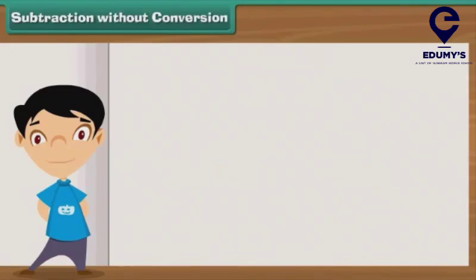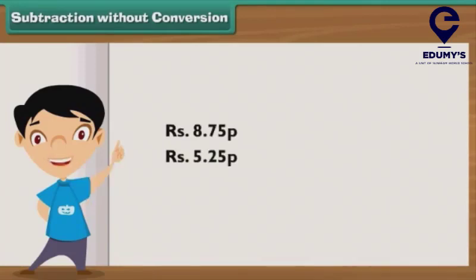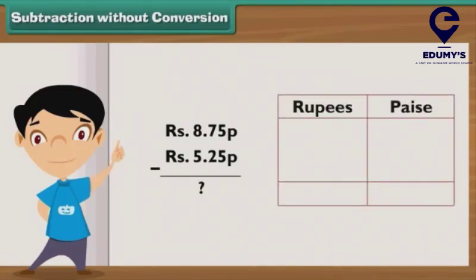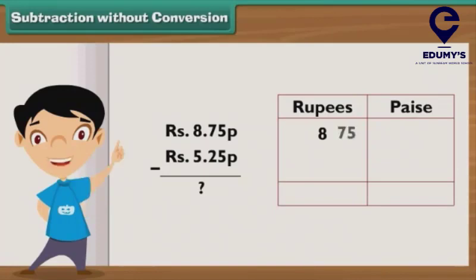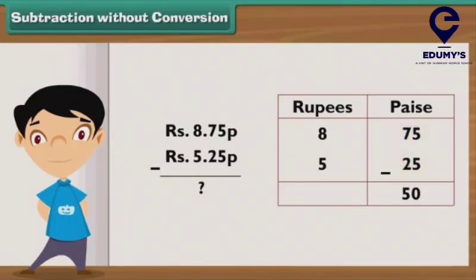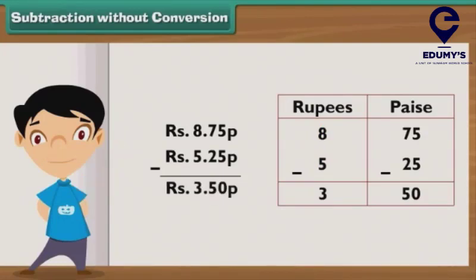Subtraction without conversion. Let's learn how to subtract 5 rupees 25 paisae from 8 rupees 75 paisae. Write 8 rupees 75 paisae as ₹8.75P. Then write 5 rupees 25 paisae as ₹5.25P under it, so that the rupee part falls in the rupee column and the paise part falls in the paise column. Subtract 25 from 75 to get 50. Write 50 in the paise column. Subtract 5 from 8 to get 3. Write 3 in the rupee column. The answer is 3 rupees 50 paisae.